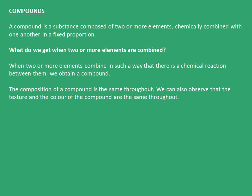On the basis of chemical properties, the second type of pure substances are compounds. A compound is a substance composed of two or more elements which chemically combine with one another in a fixed proportion. When two or more elements are combined in such a way that there is a chemical reaction between them, we obtain a compound. The composition of a compound is the same throughout, that is, it is homogeneous. The texture and color of a compound are also the same throughout.